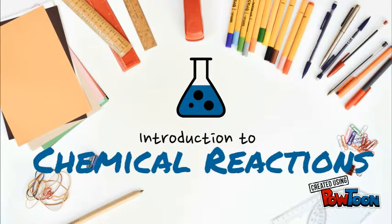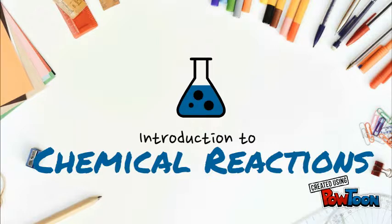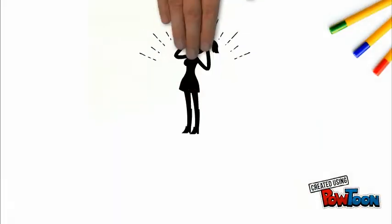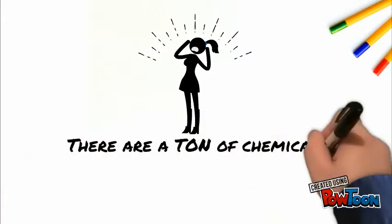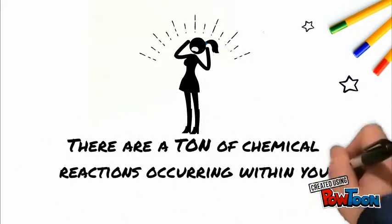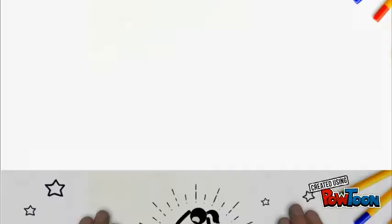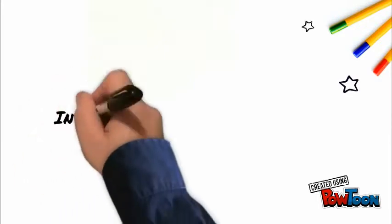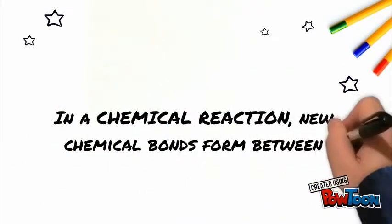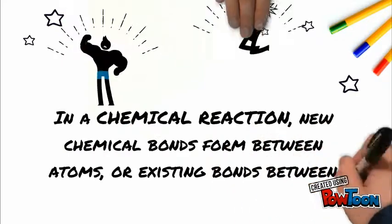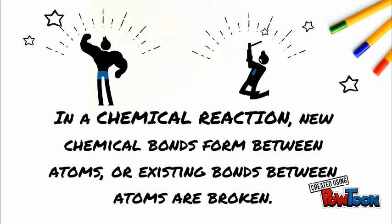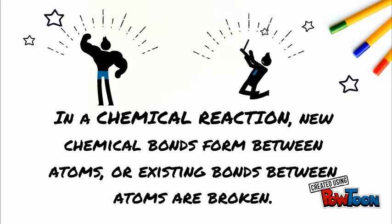Chemical Reactions for Anatomy and Physiology. There are a ton of chemical reactions occurring within you right now. Cells remain alive and functional by controlling chemical reactions. In a chemical reaction, new chemical bonds form between atoms or existing bonds between atoms are broken. These changes occur as atoms in the reacting substances, or reactants, are rearranged to form different substances, or products.